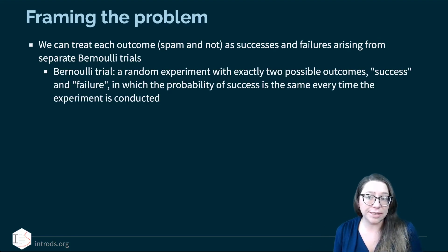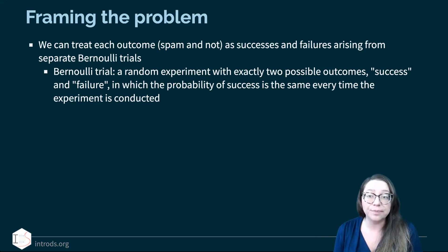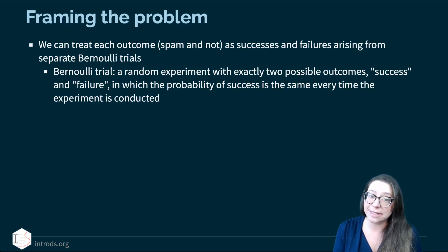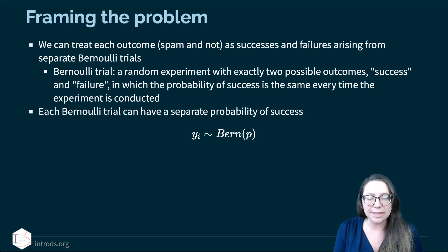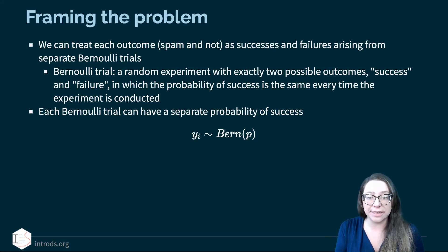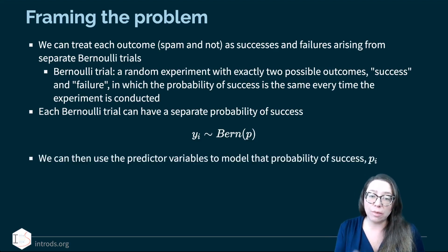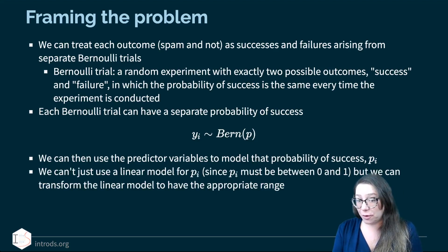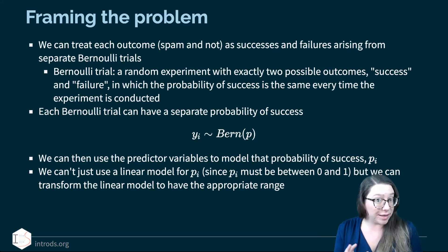To frame the problem: we can treat each outcome — spam or not — as successes and failures arising from separate Bernoulli trials. A Bernoulli trial is a random experiment with exactly two possible outcomes, success and failure, in which the probability of success is the same every time. Each Bernoulli trial can have a separate probability of success, so we're saying that y_i has a Bernoulli distribution with probability p. We can then use predictor variables to model that probability of success, p_i.